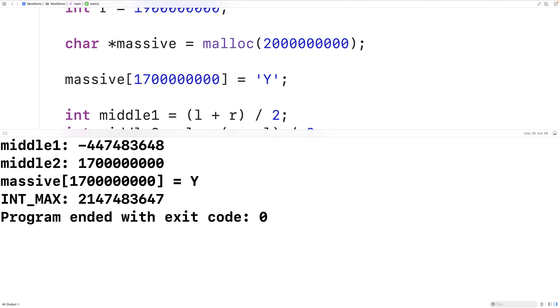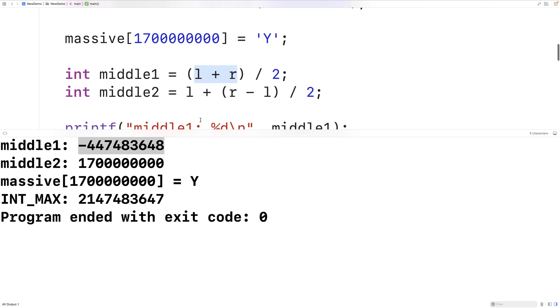And we see that middle1 is a negative number because this L plus R here caused an integer overflow, but middle2 is 1.7 billion. And that's because the way we went about this calculation prevents the integer overflow from occurring. And we do get the correct value in the array at that 1.7 billion index.